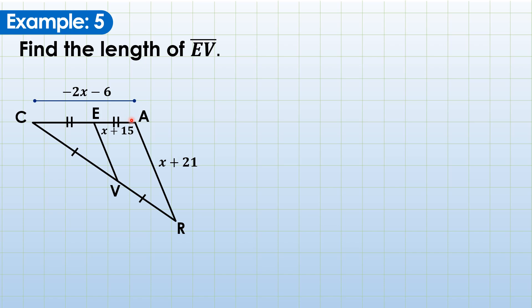Since we cannot build up an equation here because EV has no measure, we can rely on x plus 15 and negative 2x minus 6. Now, what is the relationship between EA and CA? Correct, CA is twice the measure of EA because point E is the midpoint. So you write here, CA is twice the measure of EA.